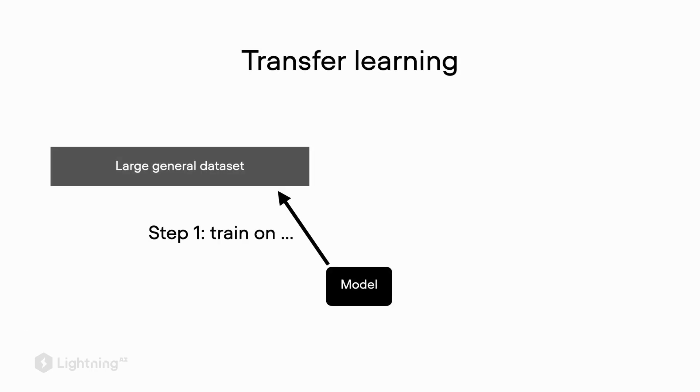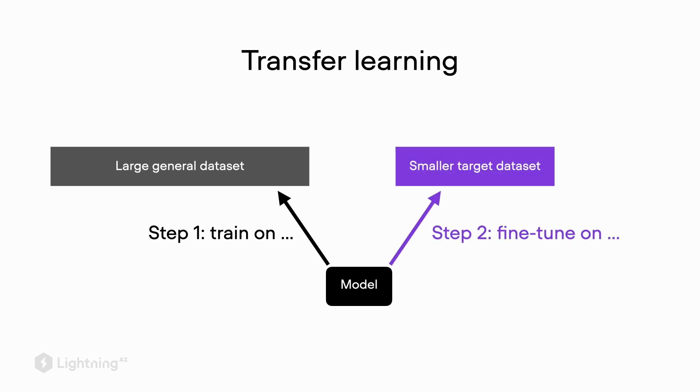In the previous videos we talked about transfer learning and saw how it works in action. Now let's talk about a related concept called self-supervised learning, which is yet another technique that helps us leverage large datasets for pre-training our neural networks. Previously we said that transfer learning is a two-step procedure: first we train on a large general dataset, and then we fine-tune the model on the smaller target dataset.